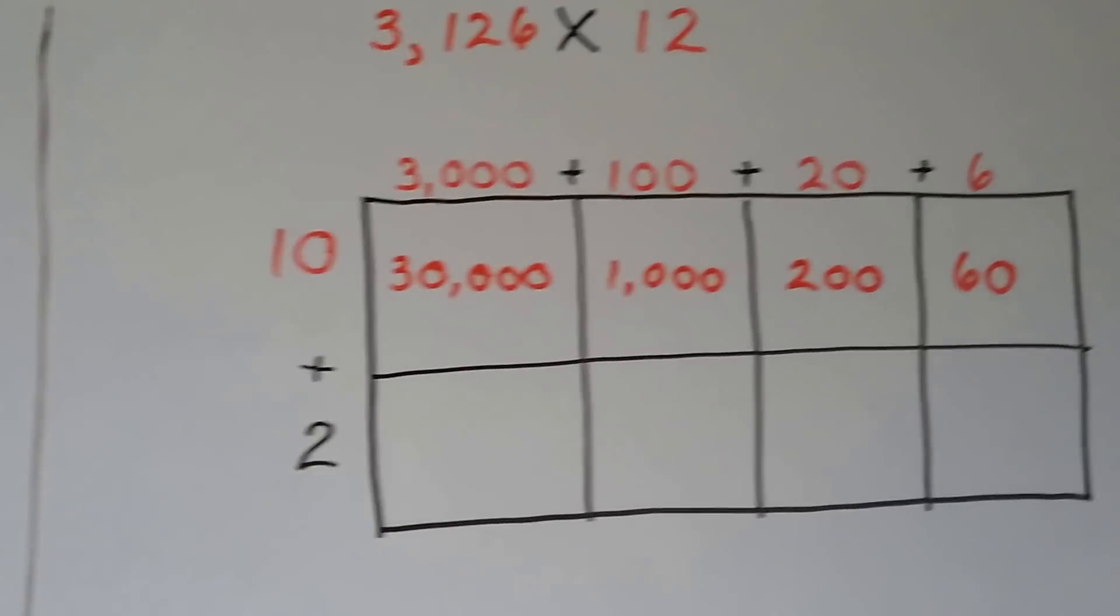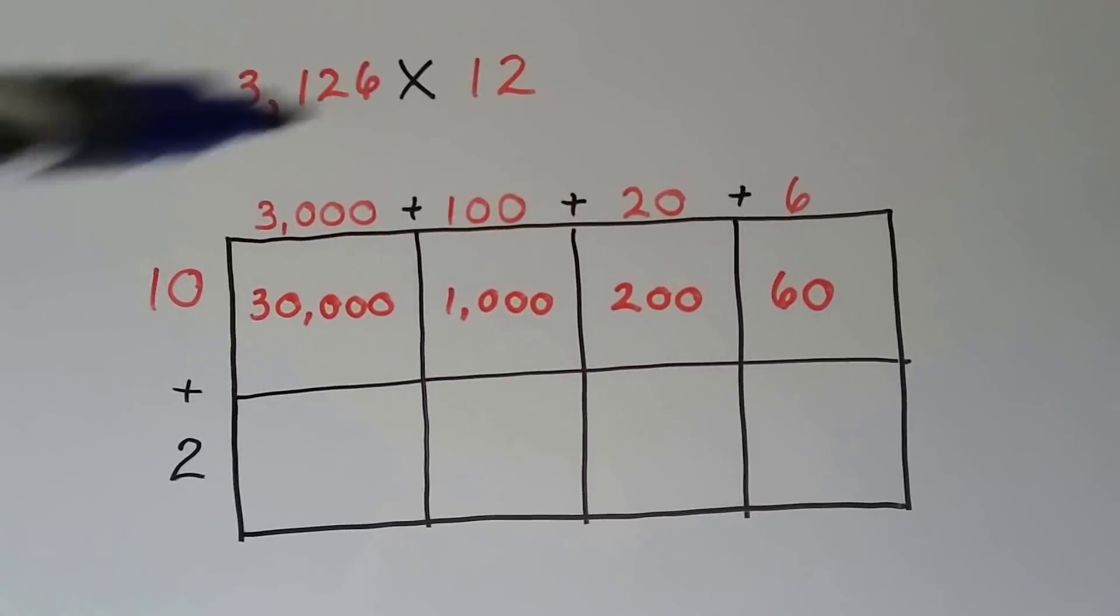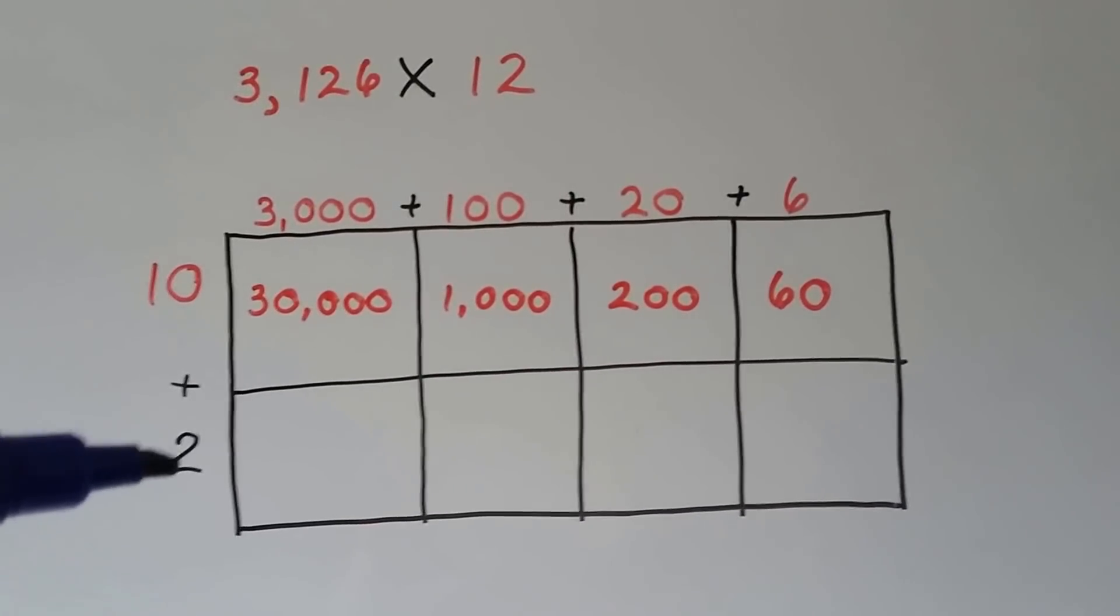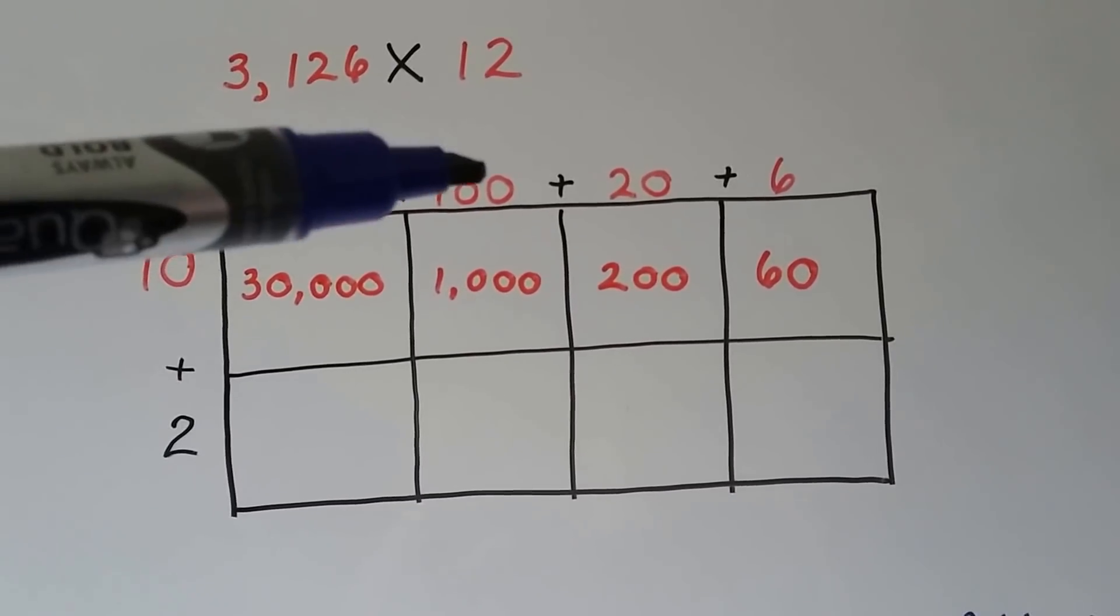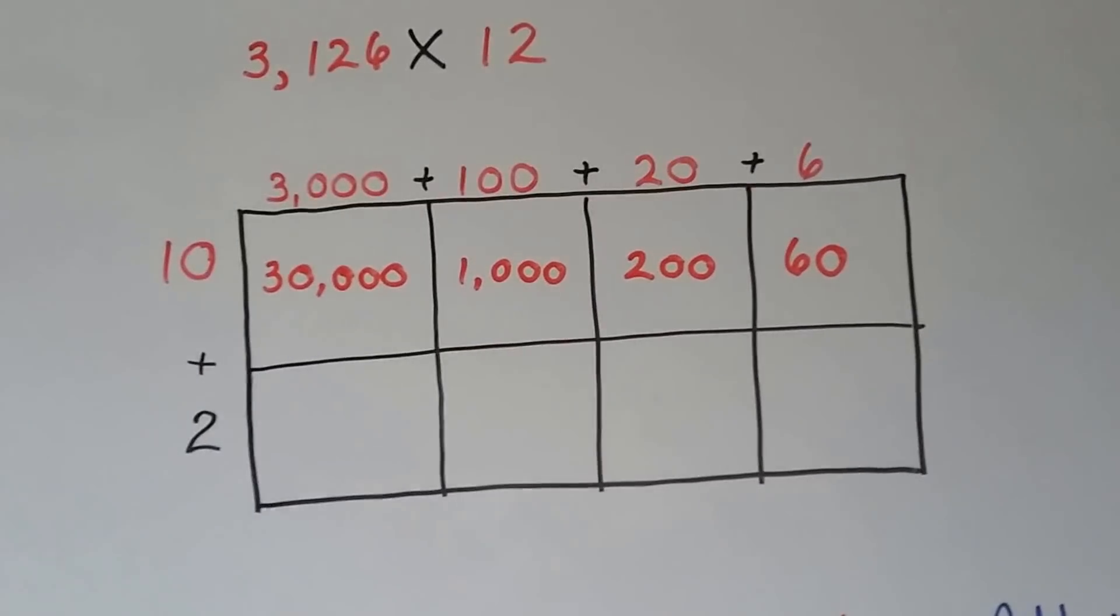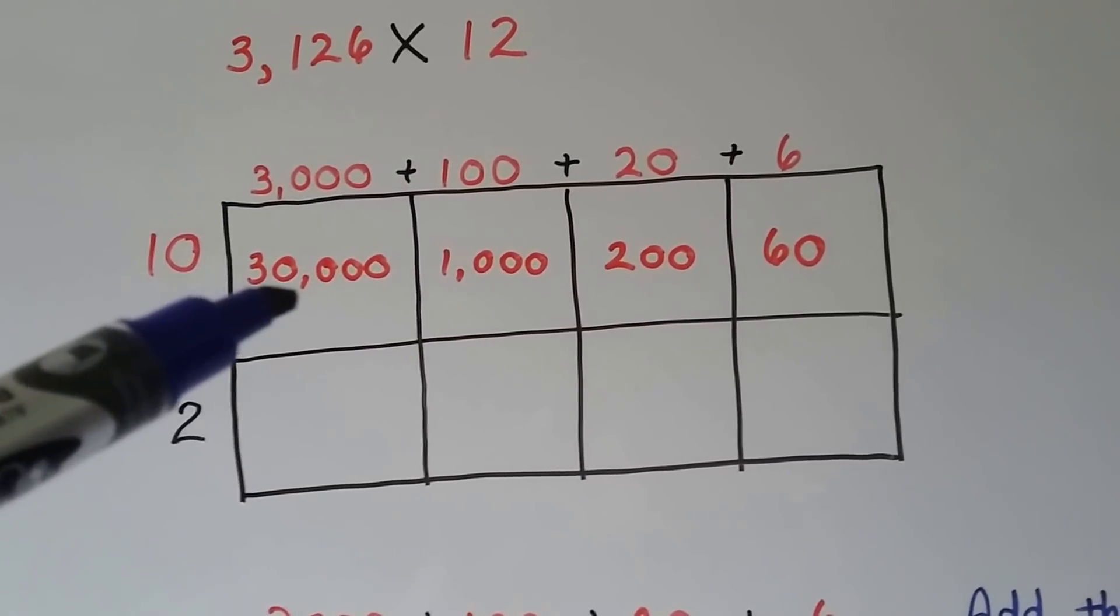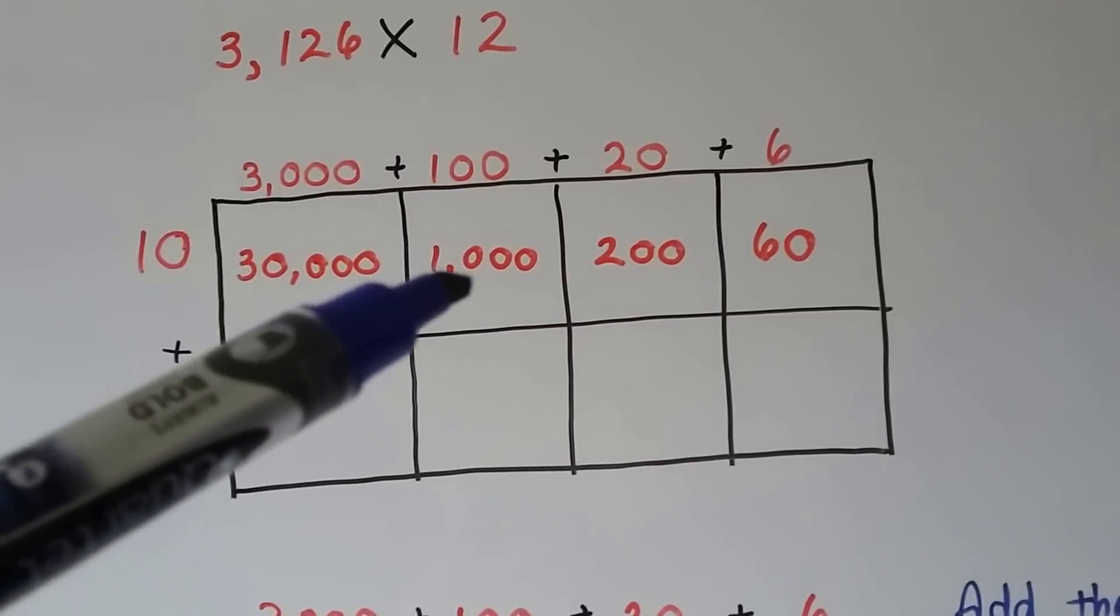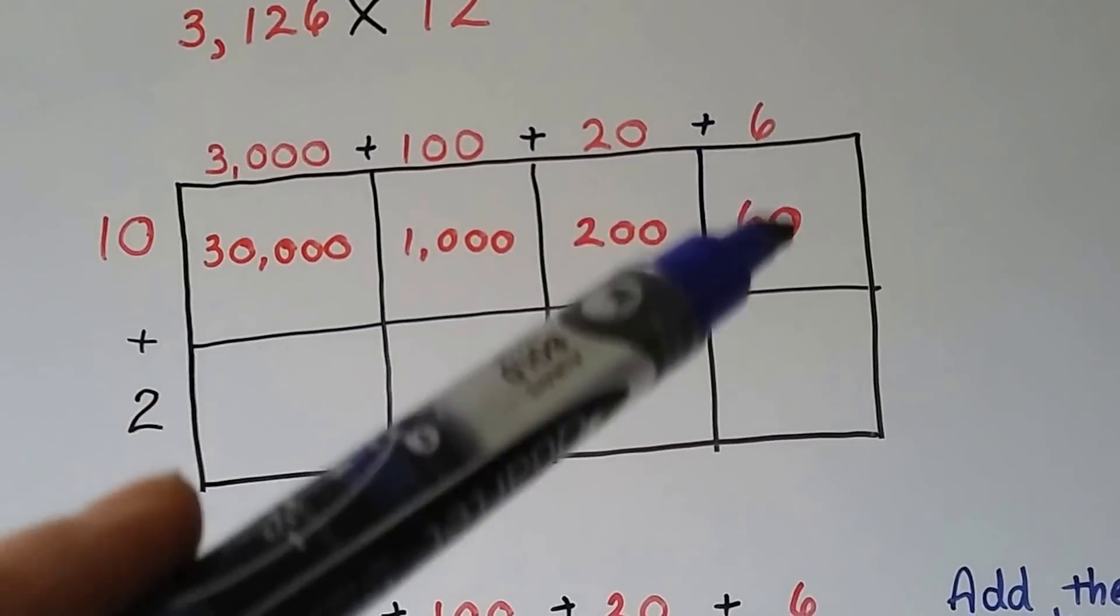We can even do it with much larger numbers like 3,126 times 12. The 12 gets broken into a 10 and a 2, and this 3,126 gets broken into 3,000, 100, 20, and 6. We do our multiplication. 10 times 3,000 is 30,000. 10 times 100 is 1,000. 10 times 20 is 200. 10 times 6 is 60.